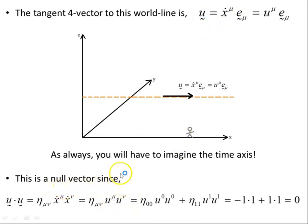This is a null vector since u dot u is eta mu nu, the Minkowski metric, x dot mu x dot nu, which is the same as eta mu nu u mu u nu. And expanding this, because we only have motion along the x axis here and nothing in the y or z direction, its four velocity must be tangent to its world line. Now, if we find the magnitude squared of this, eta zero zero u zero u zero plus eta one one u one u one, this is negative one, so negative one times one times one plus one times one, and minus one plus one, zero. So we can see it's a null vector, as it should be for photons and for massless particles.